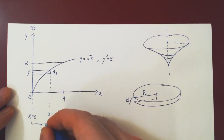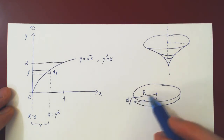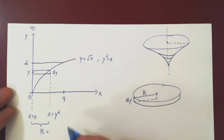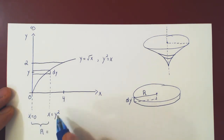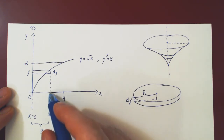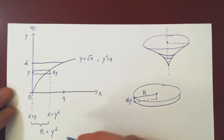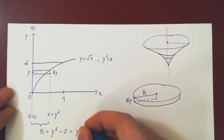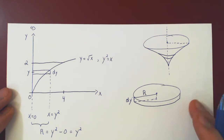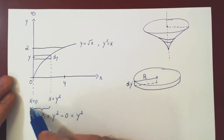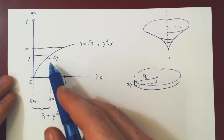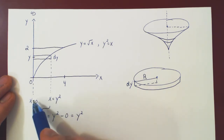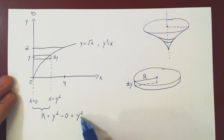The radius is the length of the rectangle — a line segment along the x-axis. To find the length, we take the bigger x value, y squared, minus the smaller x value, which here is 0. So we are left with a radius of y squared. Be careful: in some problems the smaller x value may not be 0, so always find your two x values and subtract the larger minus the smaller to get the length of your rectangle.